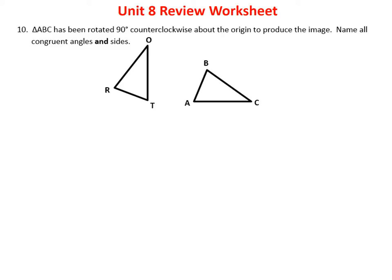Number 10 says that triangle ABC has been rotated 90 degrees clockwise about the origin. Name all the congruent sides and angles. I notice that when I shift it, A becomes T, B shifts to R, and C shifts to O. If you write 'triangle ABC maps onto triangle TRO,' these problems become easy because you can compare the corresponding letters to find your answers.